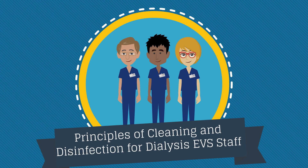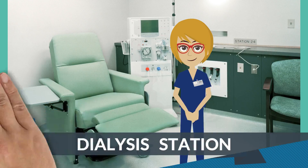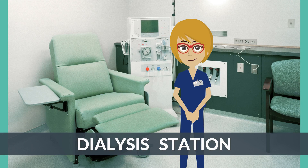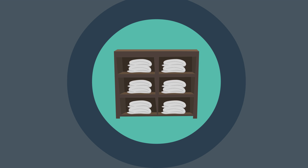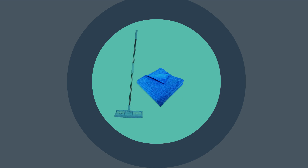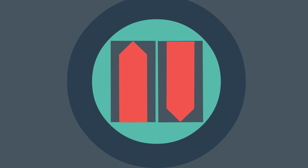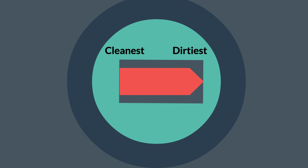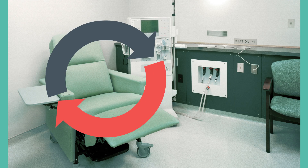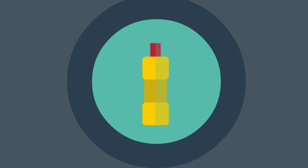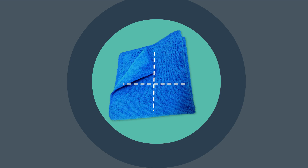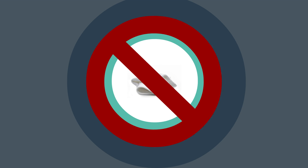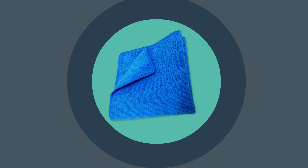Principles of cleaning and disinfection for dialysis EVS staff: Perform hand hygiene and apply gloves before cleaning the patient station. Designate sets of cleaning cloths or disposable germicidal wipes for each patient station. Use microfiber cloths and mops when available. When cleaning, clean from highest area to lowest and from the cleanest areas moving towards the dirtiest. These practices, along with moving in one direction around the dialysis station area as you clean, will help reduce the risk of cross-contamination. When using a disinfectant cleaner, wet the surface, use friction to clean, and allow to air dry. Fold the cleaning cloth in a series of squares to provide a number of potential cleaning surfaces. A wadded cloth does not clean efficiently. Replace cloth as needed; more than one cloth may be required for a patient station.